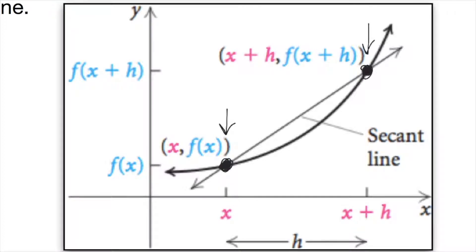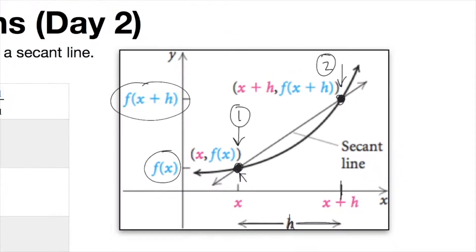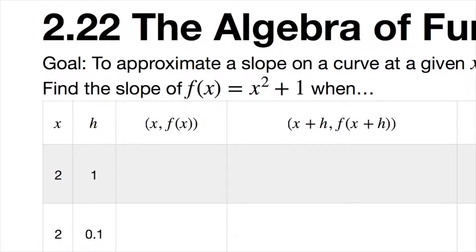Finding the slope of a secant line isn't too bad because you really just have two different points: point number one and point number two. The horizontal distance between them is h, and the height difference is the function evaluated at each x value. Whatever value you have for x, you put it into the function and get out the value of f.